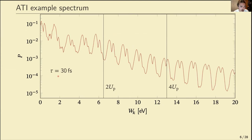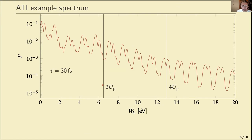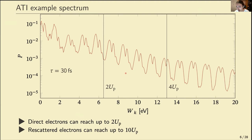Here is a calculated ATI spectrum from xenon. Below 2 × the ponderomotive energy U_p, we observe direct electrons; rescattered electrons can reach up to 10 U_p. In the low-energy region, the spectrum is noisier due to interference between direct and rescattered electrons. Above 2 U_p, the spectrum is comparatively clean, with some residual structure due to intermediate excited states of the neutral atom.